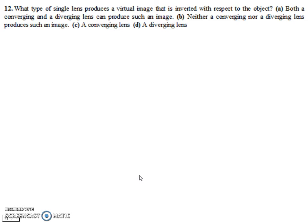Let's take a look at number 12. Which type of lens, single lens, produces a virtual image that is inverted with respect to the object? So you can look at all the ray diagrams you've done so far, and the problems you've done, and hopefully you came to the conclusion that neither converging or diverging lens produces such an image, because for a single device, virtual images are always upright. And that's actually true for whether it's a lens or a mirror. Inverted images are always real, and so they will never go together as long as we have a single device.